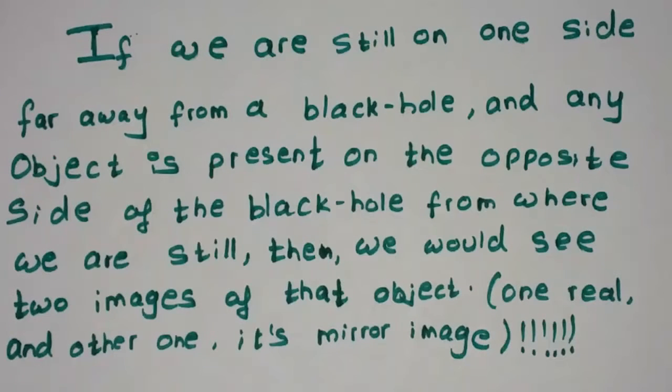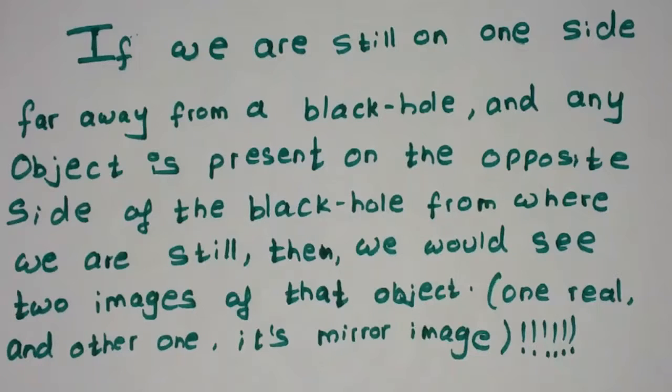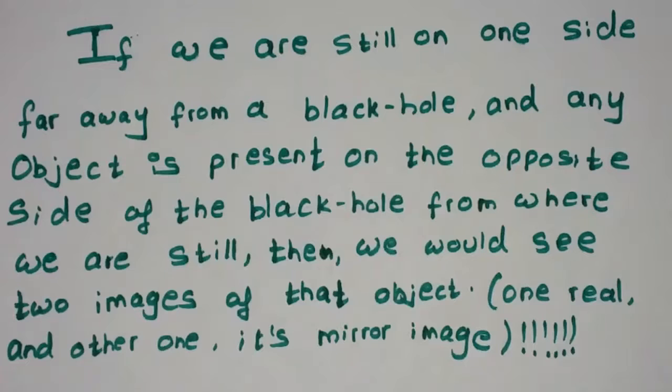If we are still on one side, far away from a black hole—of course, because if we go near it we would be attracted towards it and our length would be quite infinite because of gravitational stretching—and any object is present on the opposite side of the black hole from where we are, then we would see two images of that object.